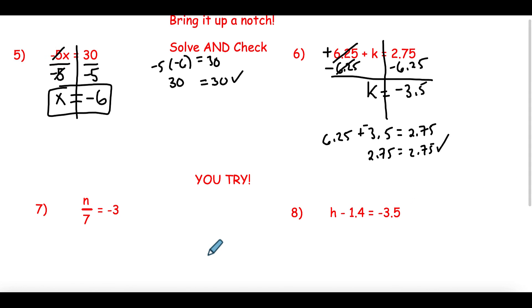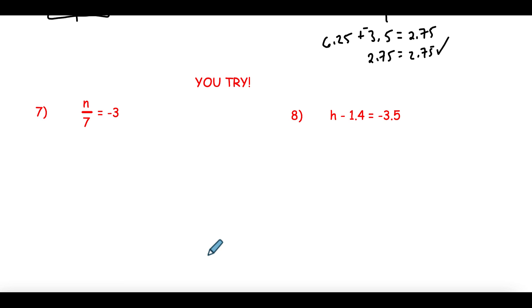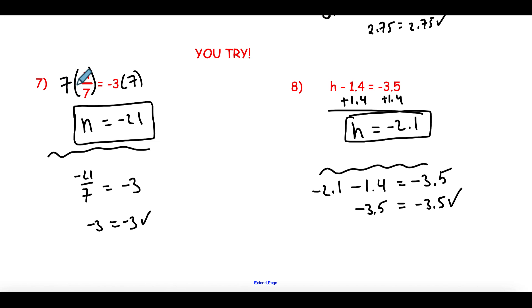I'd like you to pause the video and try these two on your own. Check them as well. See if you got them right. Over here, the opposite operation of dividing by 7 was multiplying by 7. These two numbers canceled out. And I was left with N equals negative 21 when I multiplied by 7 on both sides. What did I forget here? I forgot to draw my line right down the middle, didn't I? Over here, I have subtracting 1.4. The opposite of minus 1.4 is adding 1.4 to both sides. So I have H equals negative 2.1. You can see I checked my answers here at the bottom. They both worked out right. So we're good to go.